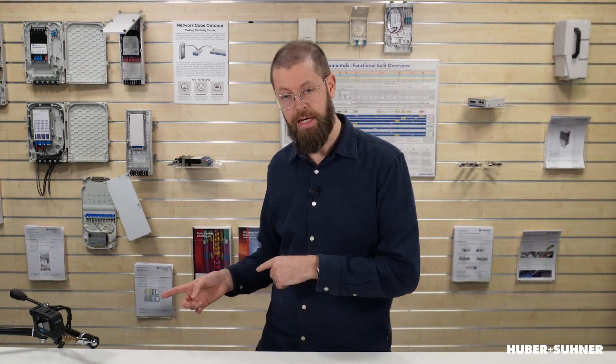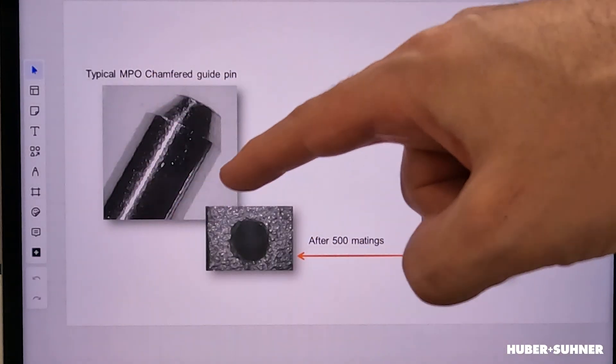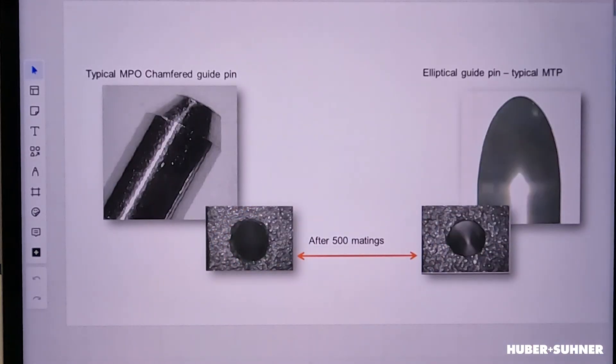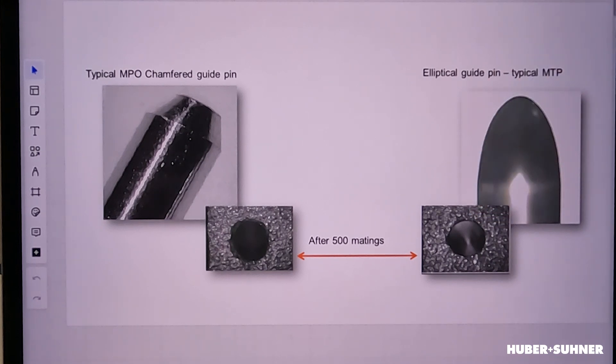So what are these improvements of the MTP connector over the MPO? One of the differences is the shape of the guide pin. As you can see, the shape of the MPO guide pin is chamfered at the top, and that means that when mating it, it actually causes quite a lot of abrasion on the female connector. The MTP, on the other hand, has this nice smooth elliptical shape of the guide pin, which obviously causes much less abrasion.